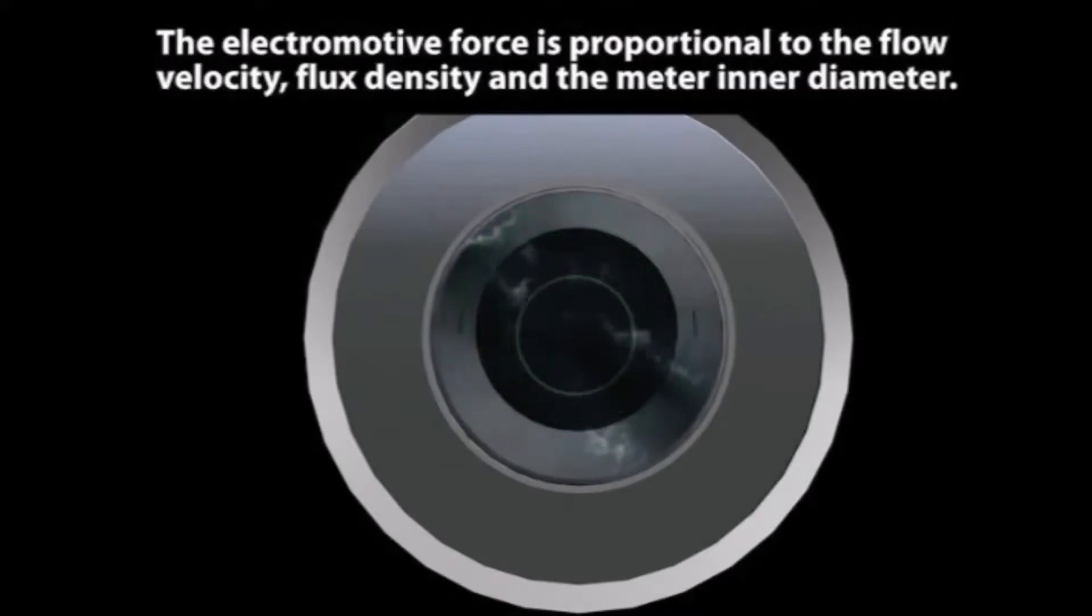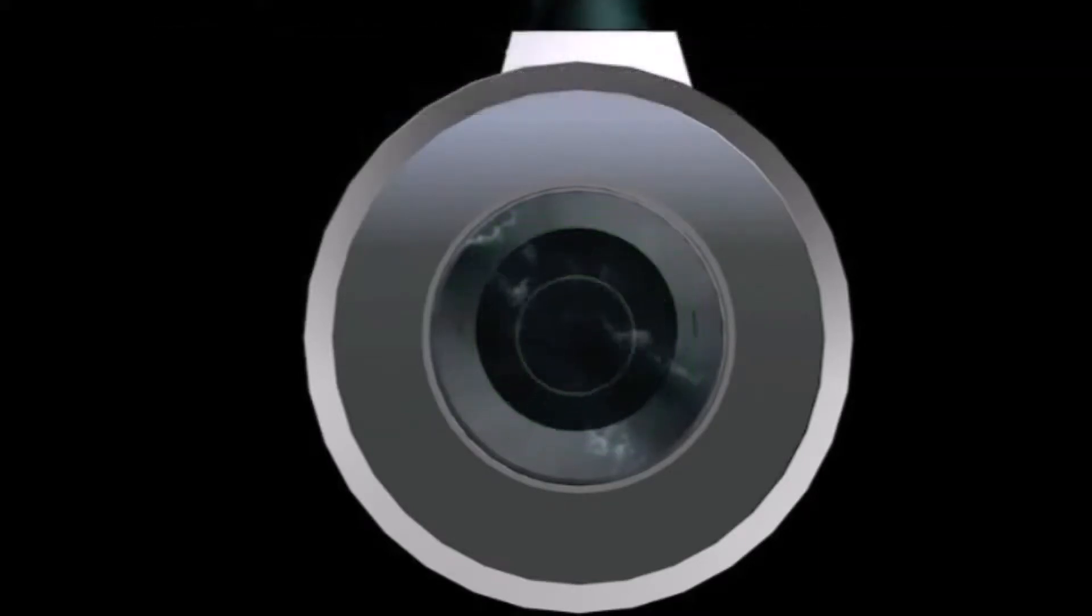The electromotive force is proportional to the flow velocity, flux density, and the meter inner diameter. The flux density of the magnetic field and the meter's inner diameter are constant values. Therefore, the magnetic flow meter can calculate the flow velocity and volumetric flow from the electromotive force.